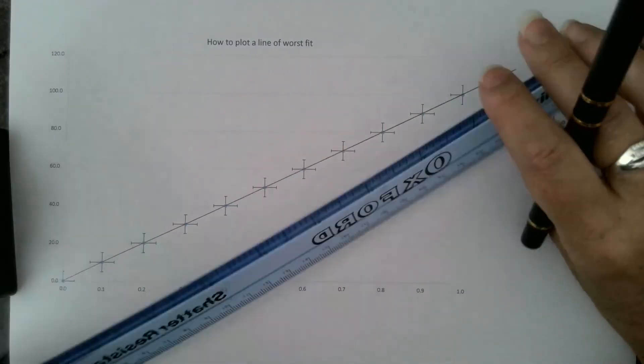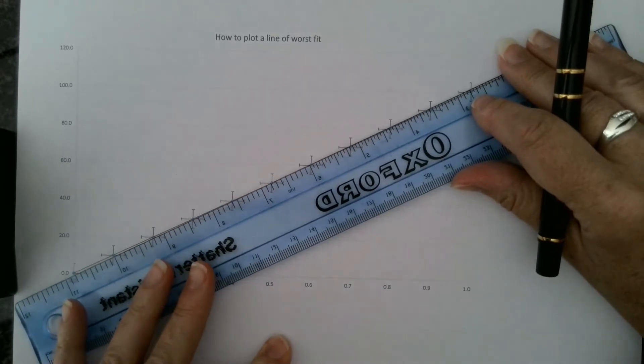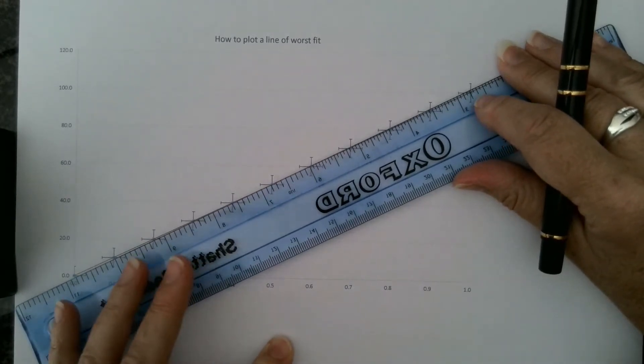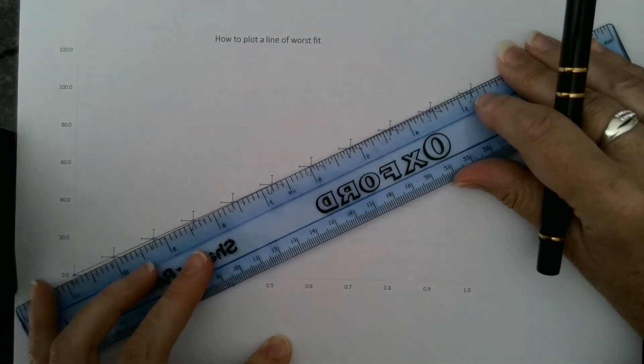So how do we do it? Just like when you're plotting a line of best fit, you must have your line of worst fit going through all your error bars. It must go through all your error bars.